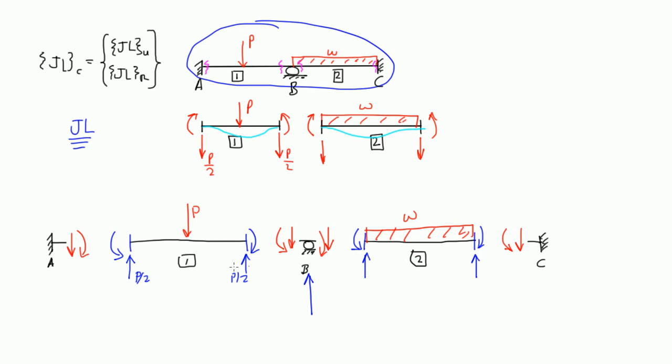So we found the reactions for each of the elements and we found the reactions going on at the joints A, B, and C.